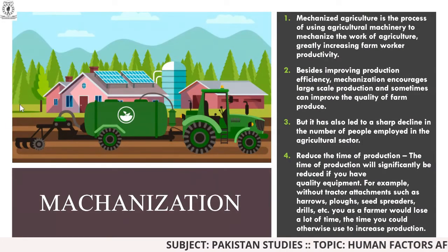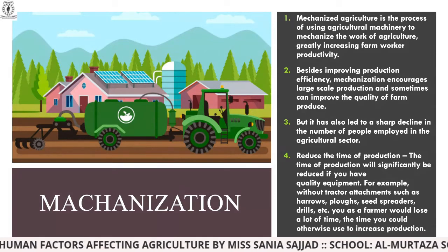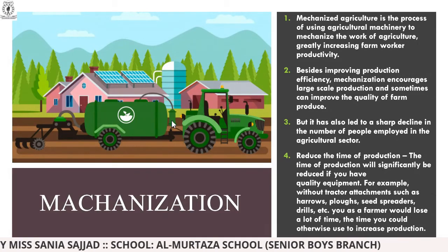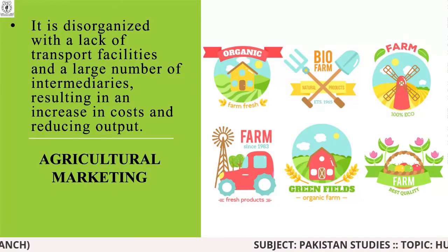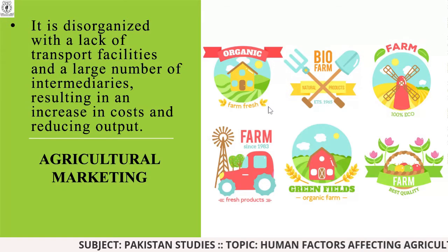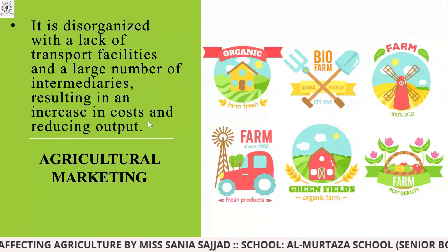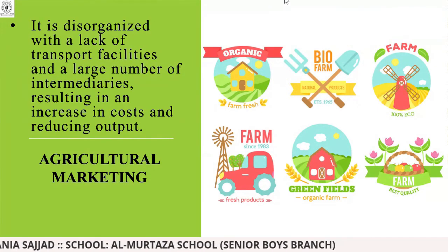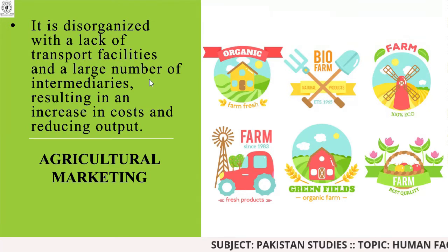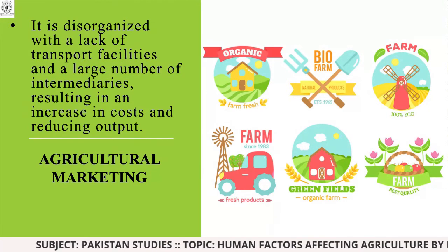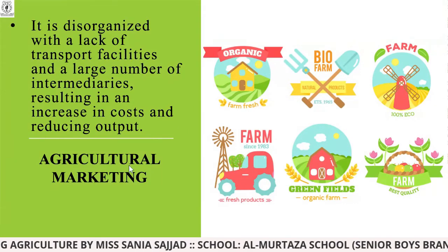You can see on the left side a machine which replaces labor force, though a worker is still needed to look after it. Coming towards agricultural marketing: this is done through banners, standees, and advertisements. However, it is disorganized, with a lack of transport facilities and a large number of intermediaries, resulting in increased cost and reduced output — more money is spent on marketing but output is delayed.